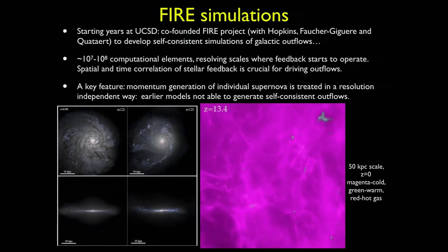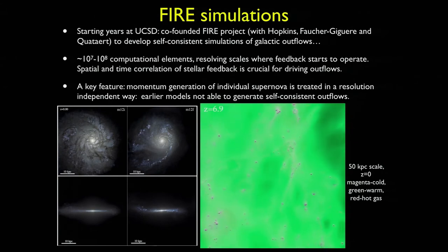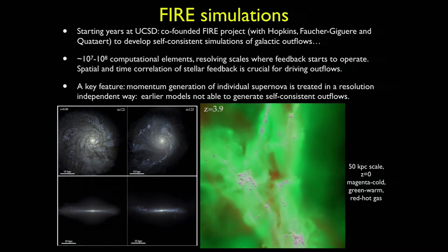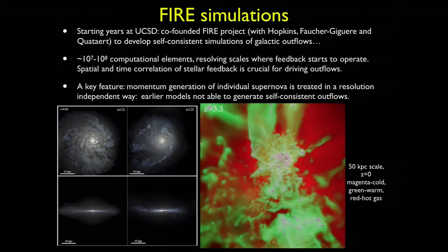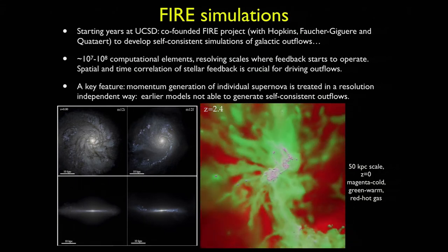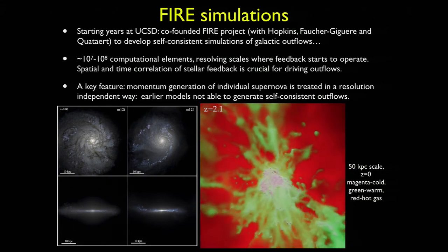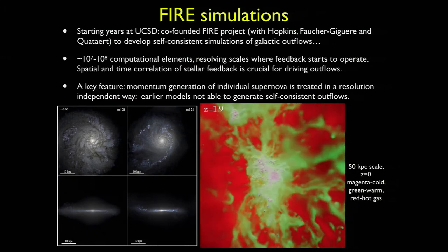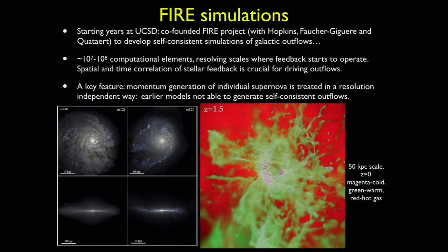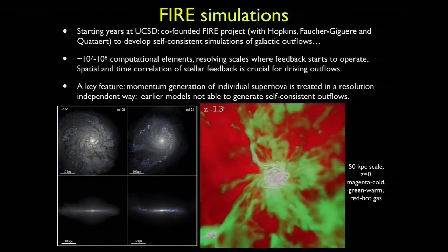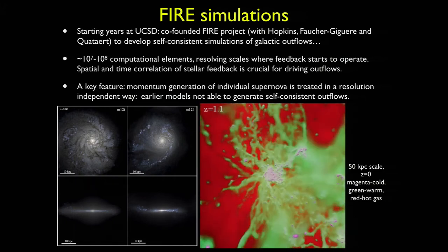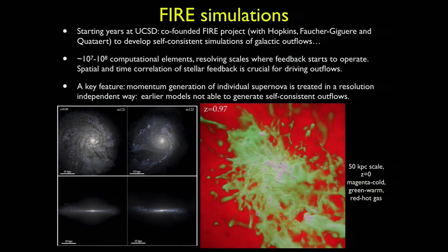The big advancement came relatively early in my career here at UCSD — in 2013 and 2014, when I just started my faculty position. We started something called the FIRE project, which stands for Feedback in Realistic Environments, with a couple of collaborators. Our goal was to develop self-consistent simulations where we can actually produce galactic outflows from almost first principles. Using the fact that computers were getting faster, we were able to do hundreds of millions of resolution elements for one galaxy, and resolve scales where feedback actually starts and where star formation occurs. That enables us to get clustered events of star formation and stellar explosions.